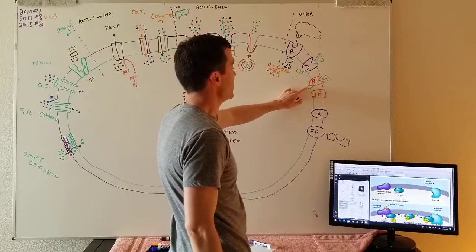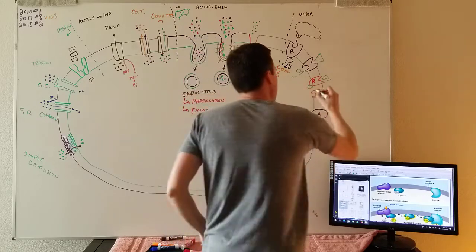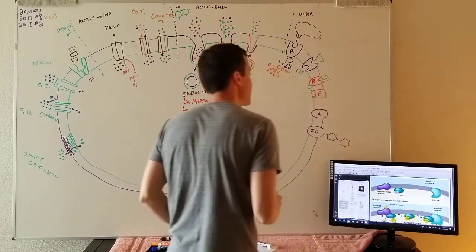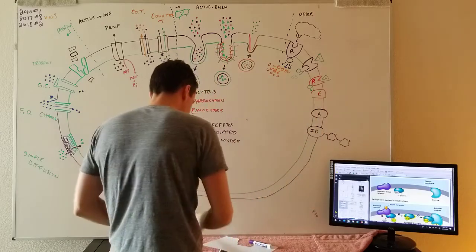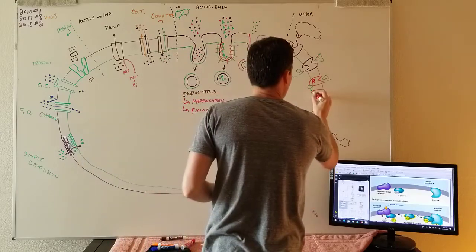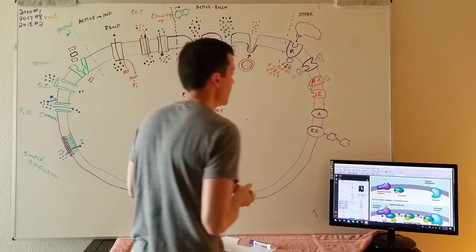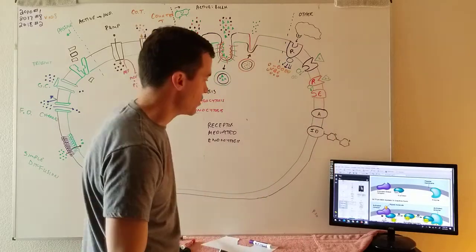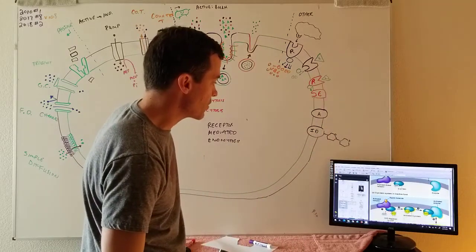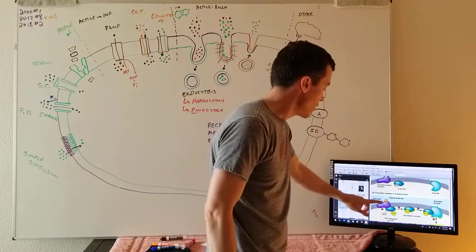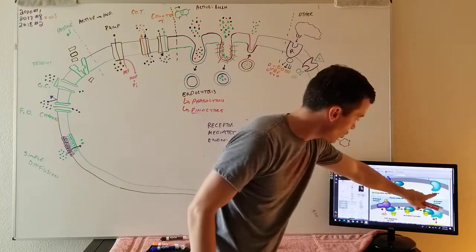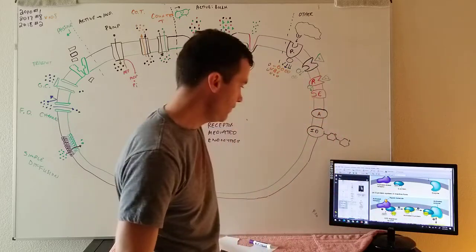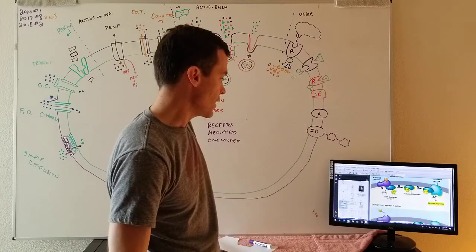Now I've got this G-protein. Whenever that ligand hits that receptor, this G-protein is set free. He goes over to the enzyme. Once he bumps into the enzyme, that enzyme changes shape and now that enzyme is in the on position. That's what you're seeing in this picture.